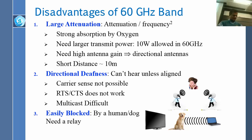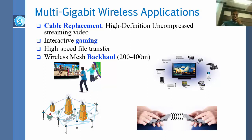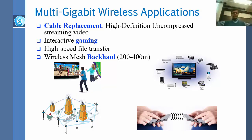In spite of those problems, 60 GHz is succeeding and there are good applications for it. Cable replacement is the primary use: replacing the many cables on the back of a TV with a high-speed wireless connection. Other applications include interactive gaming requiring high throughput, high-speed file transfer, wireless mesh backhaul over longer distances, and everything around the TV ecosystem.